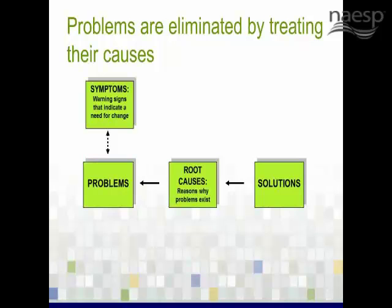Test scores are an example of symptoms. They help you to identify a gap between the real and the ideal. But test scores cannot tell you why the gap exists. If you only treat the symptoms, you will not eliminate the gap. Only by reducing or eliminating causes can we reduce the gaps between what's happening right now and where we'd like to see our students achieving.